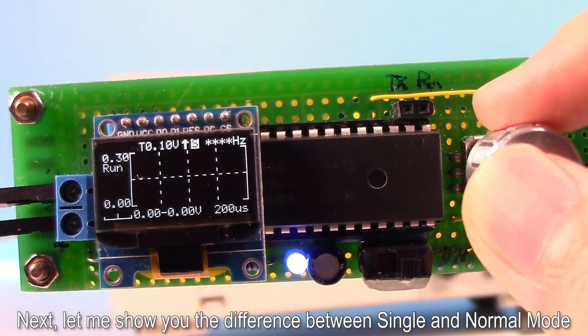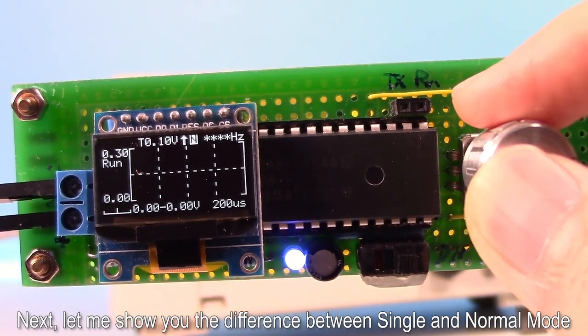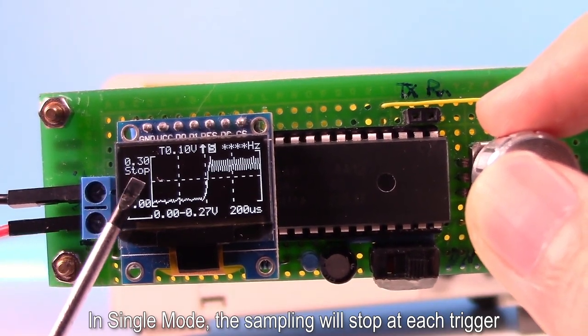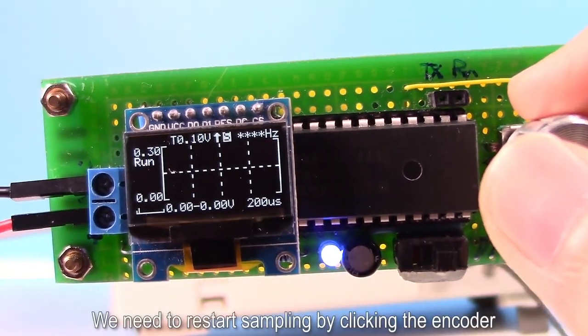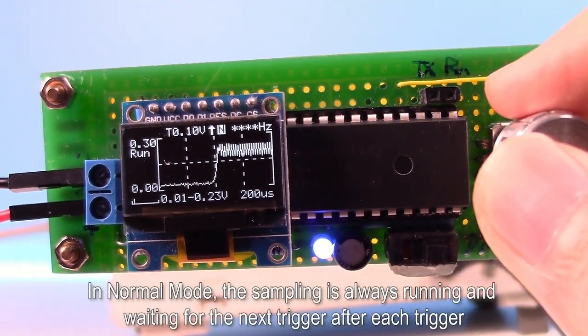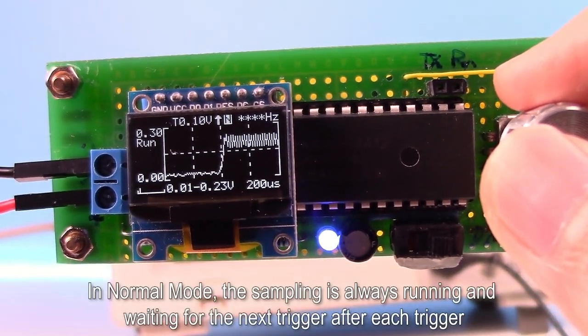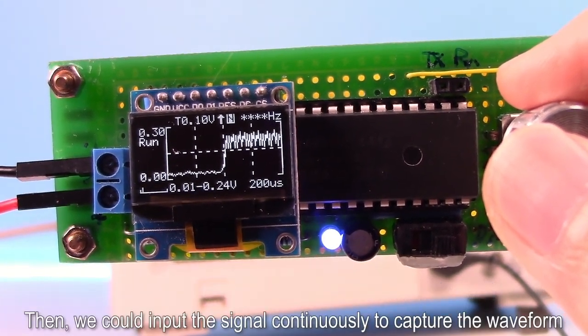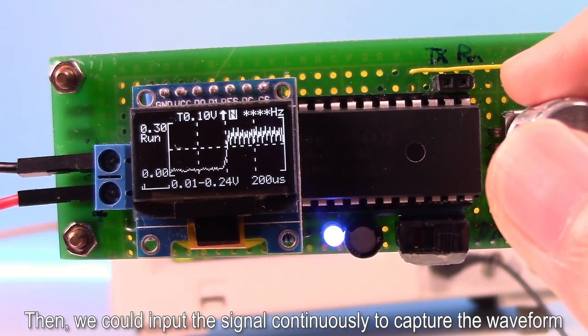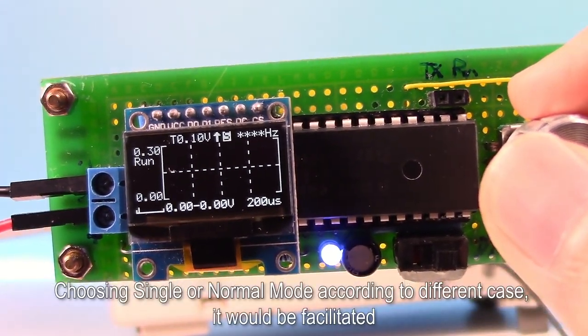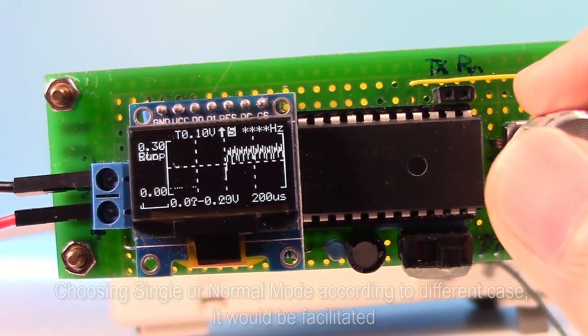Next, let me show you the difference between single and normal mode. In single mode, the sampling will stop at each trigger. We need to restart the sampling by clicking the encoder. In normal mode, the sampling is always running and waiting for the next trigger after each trigger. Then we could input the signal continuously to capture the waveform. Choosing single or normal mode according to different case, it would be facilitated.